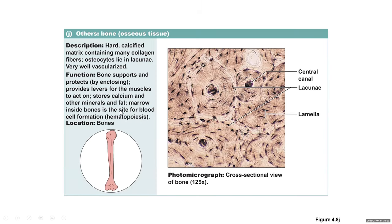Another supporting connective tissue is bone, also called osseous tissue. Description: hard, calcified matrix containing many collagen fibers; cells are osteocytes that lie in lacunae; very well vascularized. Function: bone supports and protects by enclosing, provides levers for muscles to act on, stores calcium and other minerals and fat. Marrow inside bones is the site for blood cell formation — a process called hematopoiesis.